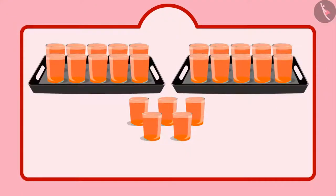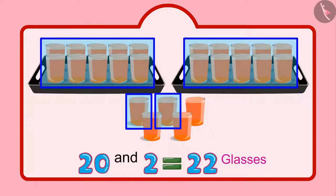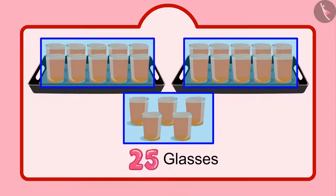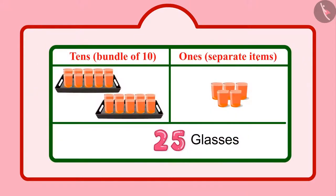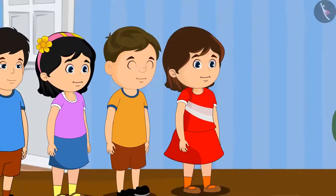Children, can you tell me how many glasses of sherbet were distributed by Chotu and Aarti together? Let's see. First of all, Chotu distributed 2 groups of 10 glasses, i.e. 20 glasses of sherbet, and then 5 more glasses. That makes it 21, 22, 23, 24, 25. Chotu distributed 25 glasses of sherbet. In these 25 glasses, 2 means 2 tens and 5 means 5 units.